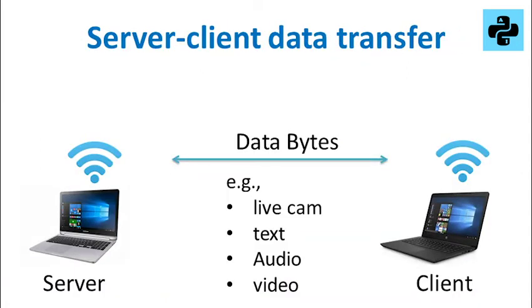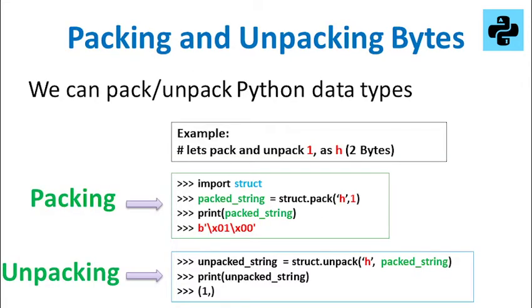For example, if we want to send a digit 1 from a client to a server, we should pack it in the client and then send it to the server. At the server, we can recover the Python data by unpacking the bytes data.